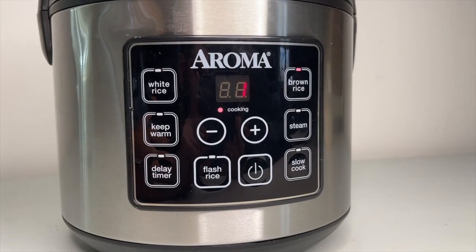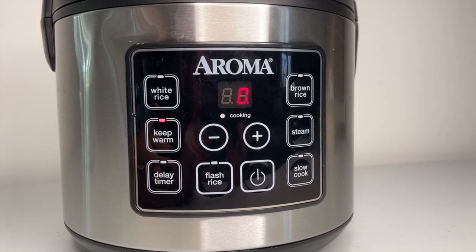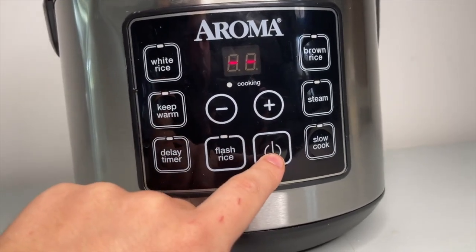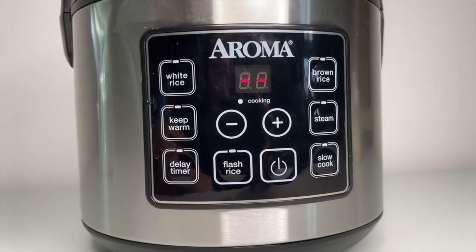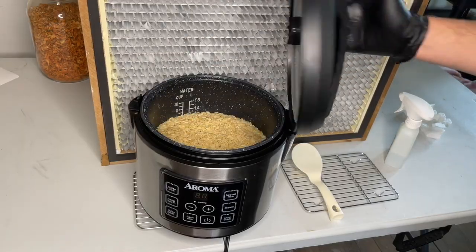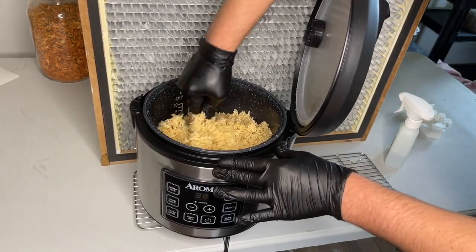After the cycle has finished, you will have to shut it off yourself or it will keep it warm and burn the bottom. While it is still hot, open up the rice cooker in front of a laminar flow hood and stir it with a sterile spoon.